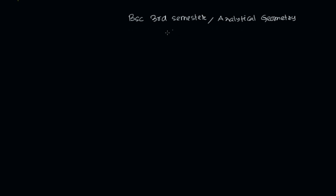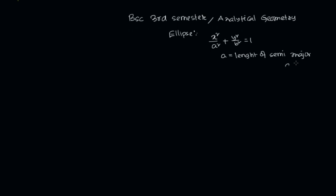Under conic sections, the important topic is the ellipse. The general standard equation of an ellipse is x² / a² + y² / b² = 1, where a is equal to the length of the semi-major axis.